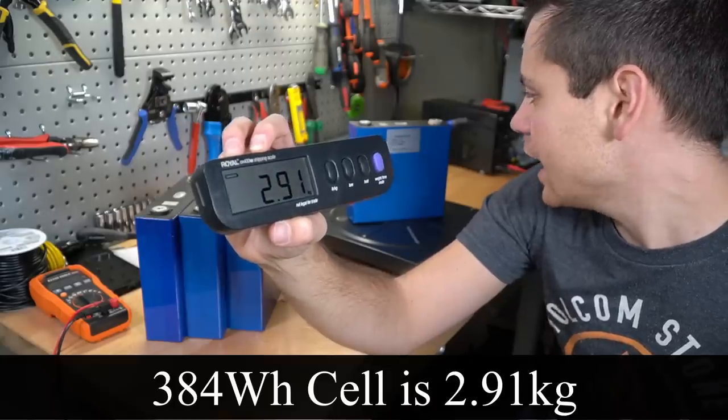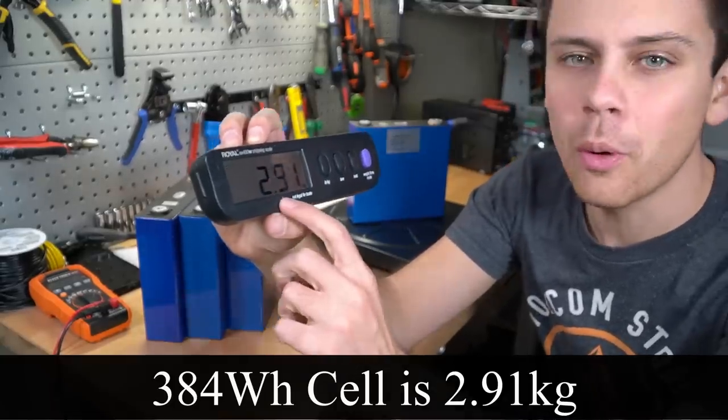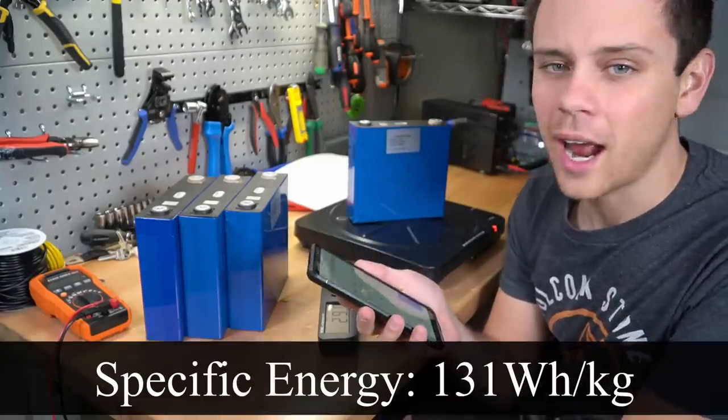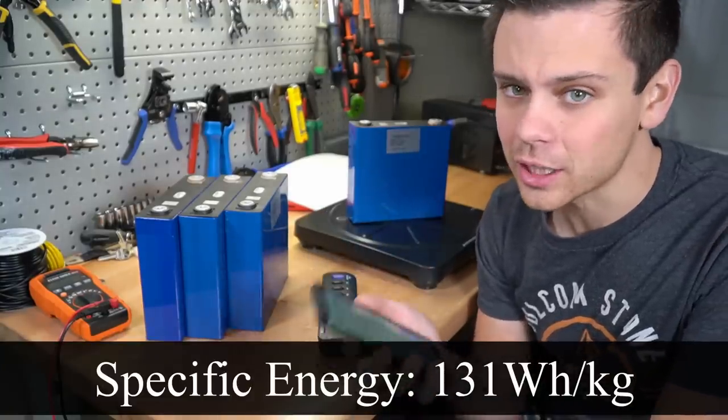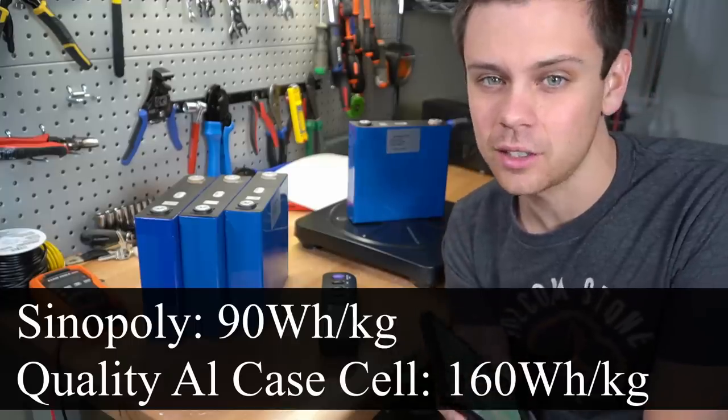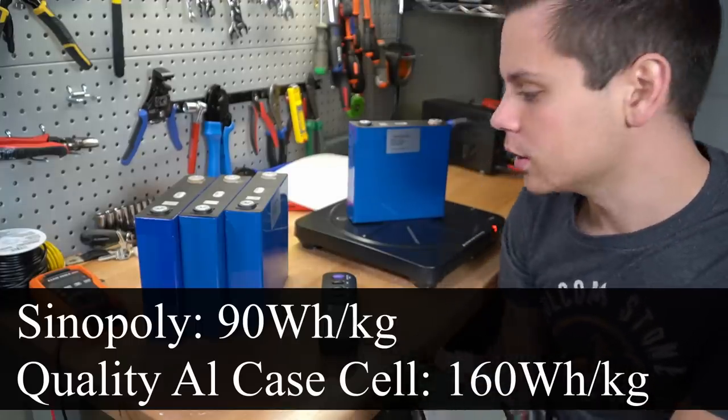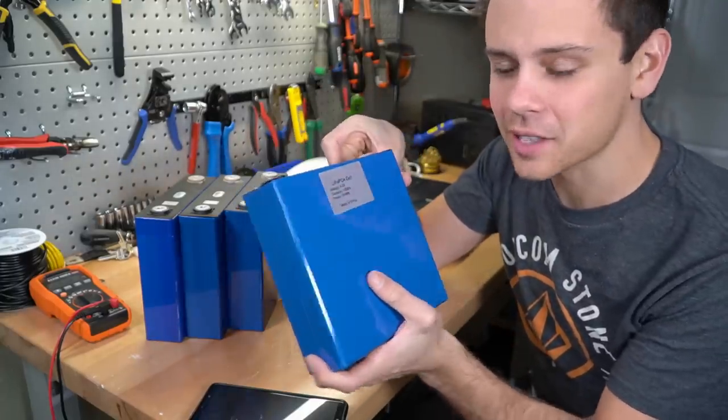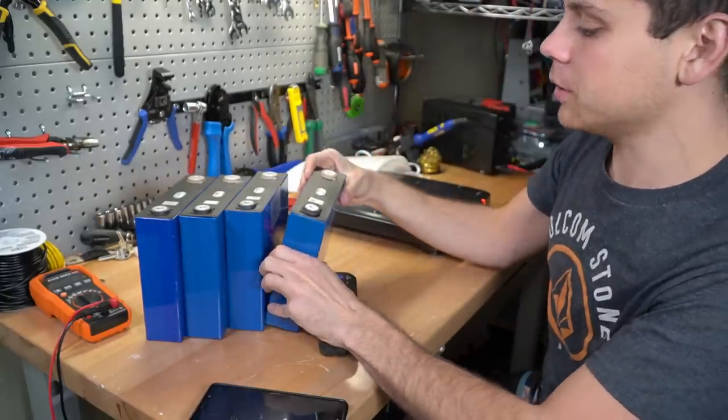So a single 384 watt-hour cell is 2.91 kilograms. So that's 131 watt-hours per kilogram, which is really good. That is much better than a Sinopoly, but it's not as good as the cells that we tested last month that were aluminum cased cells. But the real test is, will these actually produce that many watt-hours? So we need to build a battery.